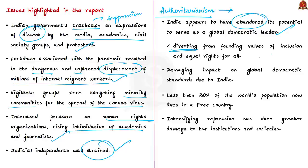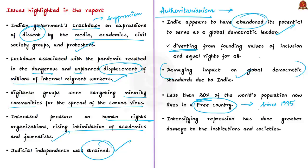This is a worrisome situation for our democratic country. Most importantly, India's fall from democratic values has affected global scores. Since India fell from the upper ranks of free nations, this has a particularly damaging impact on global democratic standards. With India declining to partly free, less than 20% of the world's population now lives in a free country — the smallest such proportion since 1995.